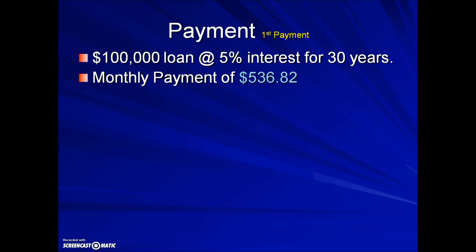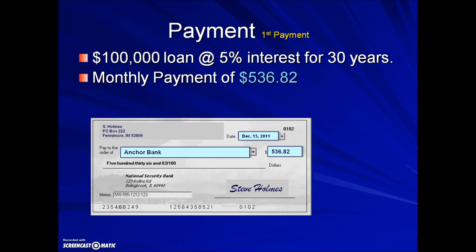The monthly payment is $536.82. So here's the check — this individual has made out their first check. The question is: how much of this first check do you think is going towards principal, and how much is going towards interest?